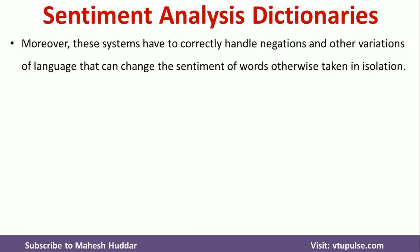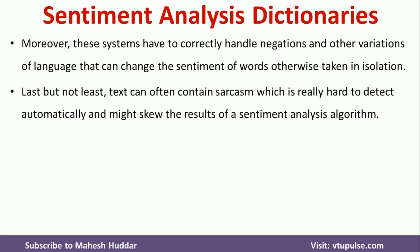Another limitation is that these systems must correctly handle negations. For example, 'not bad' actually means good — a positive sentiment — but a dictionary-based method may treat 'bad' as negative. Additionally, text often contains sarcasm, which is very hard to detect and handle, and dictionary-based methods do not address this.